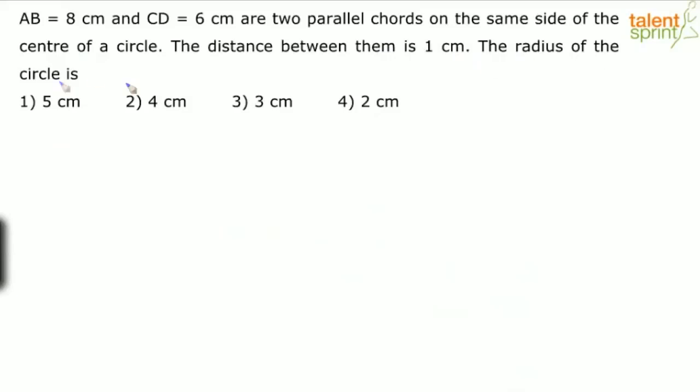The radius of the circle is quite similar to the previous one. The only difference is that in the previous question, the two parallel chords were on opposite sides of the center, and this time they're on the same side of the center of the circle.